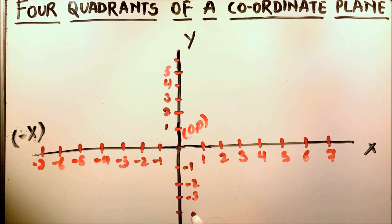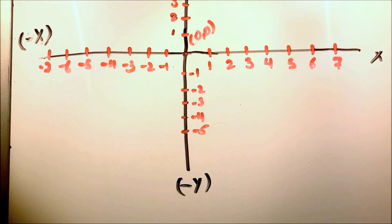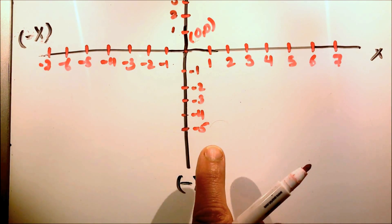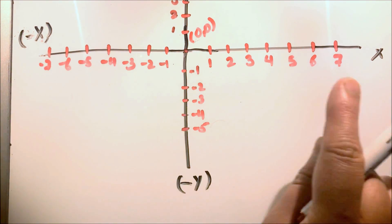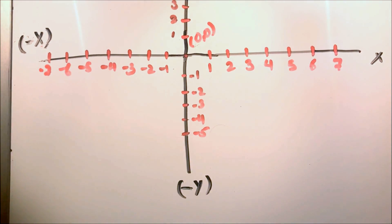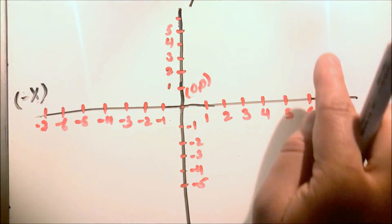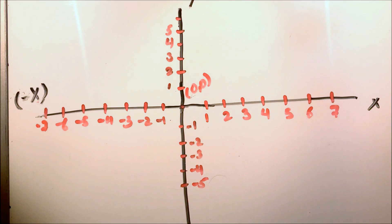Going down: negative 2, negative 3, negative 4, negative 5. Here we will write minus y, and here minus x, x, and y. So these are the four partitions or four quadrants in the coordinate plane.